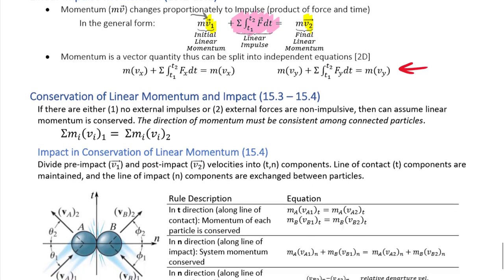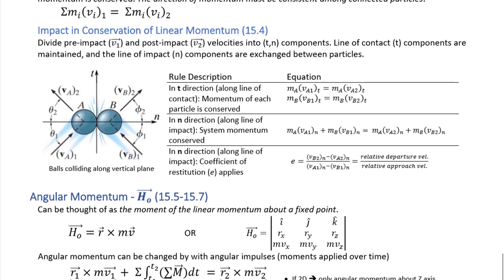A special case of conservation of momentum that we spend most time on is impact. For one-dimensional impact with a single ball — like a ball bouncing off a surface — the only equation needed is the coefficient of restitution equation. The coefficient of restitution always applies perpendicular to the surface. The bounce velocity coming off equals the coefficient of restitution times the original velocity, with the sign flipped because the ball bounces back in the opposite direction.